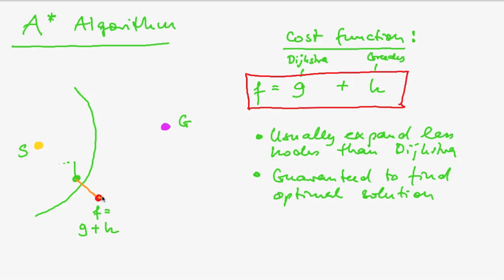So the g function, that is the path back to the start, and we know that exactly, whereas the h function is an estimate of the remaining distance towards the goal.